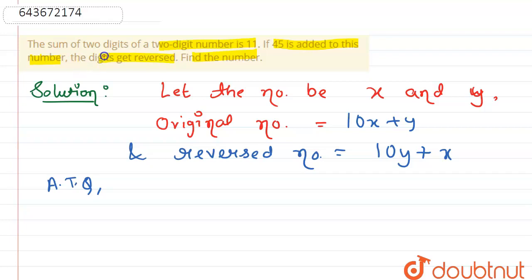The sum of two digits of two-digit number is 11, that is x plus y equals to 11. Consider this equation as equation 1. Now if 45 is added to this number, the digits get reversed.